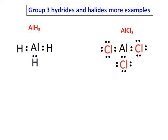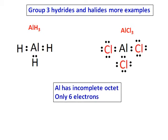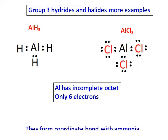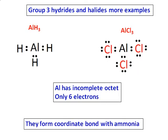Aluminum has incomplete octet. Just similar to the boron hydride, even aluminum hydride or aluminum chlorides can form coordinate bond with ammonia.